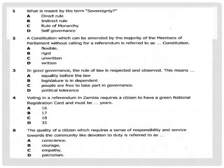Looking at the paper, Question 1 asks: what is meant by the term 'sovereign'? There are possible answers: A — direct rule, B — indirect rule, C — rule of monarchy, D — self-governance. To answer this, you should know what sovereign means.